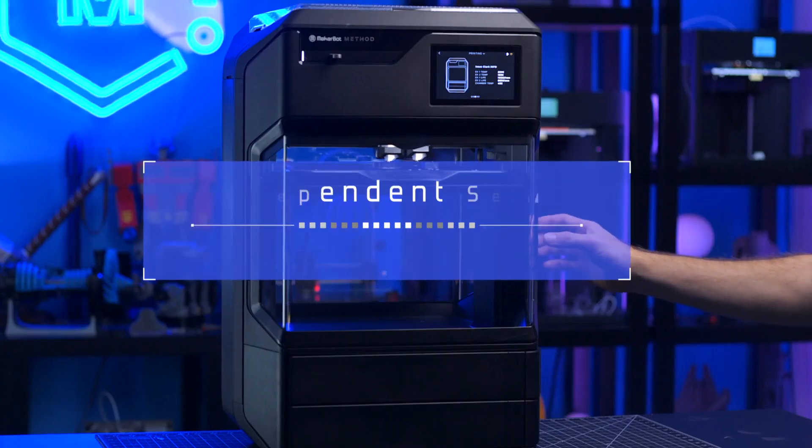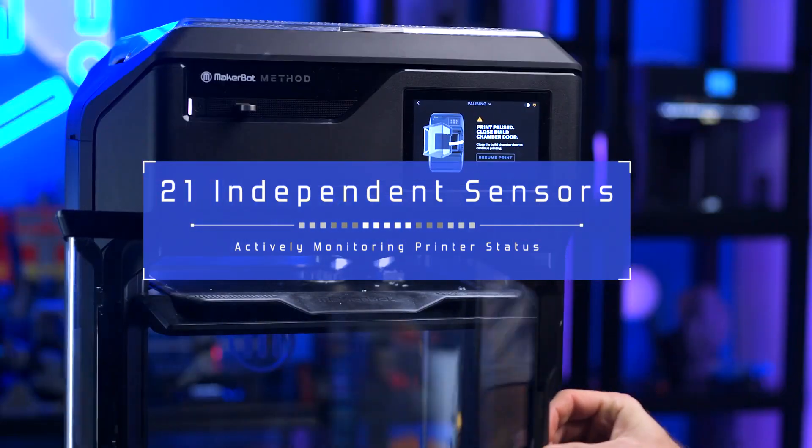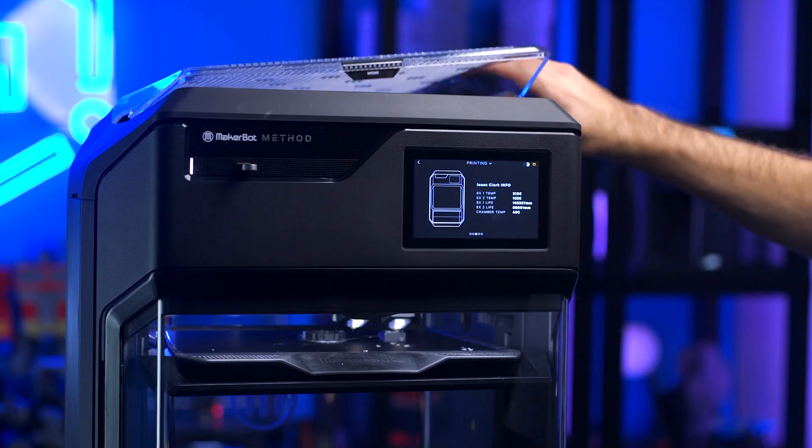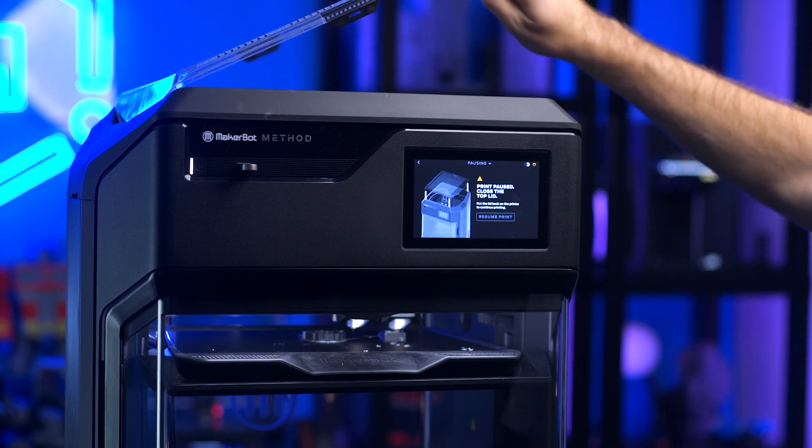For the times when you aren't watching, there are 21 independent sensors detecting things like relative humidity, jam detection, material detection, temperature, and even automatic calibration sensors.